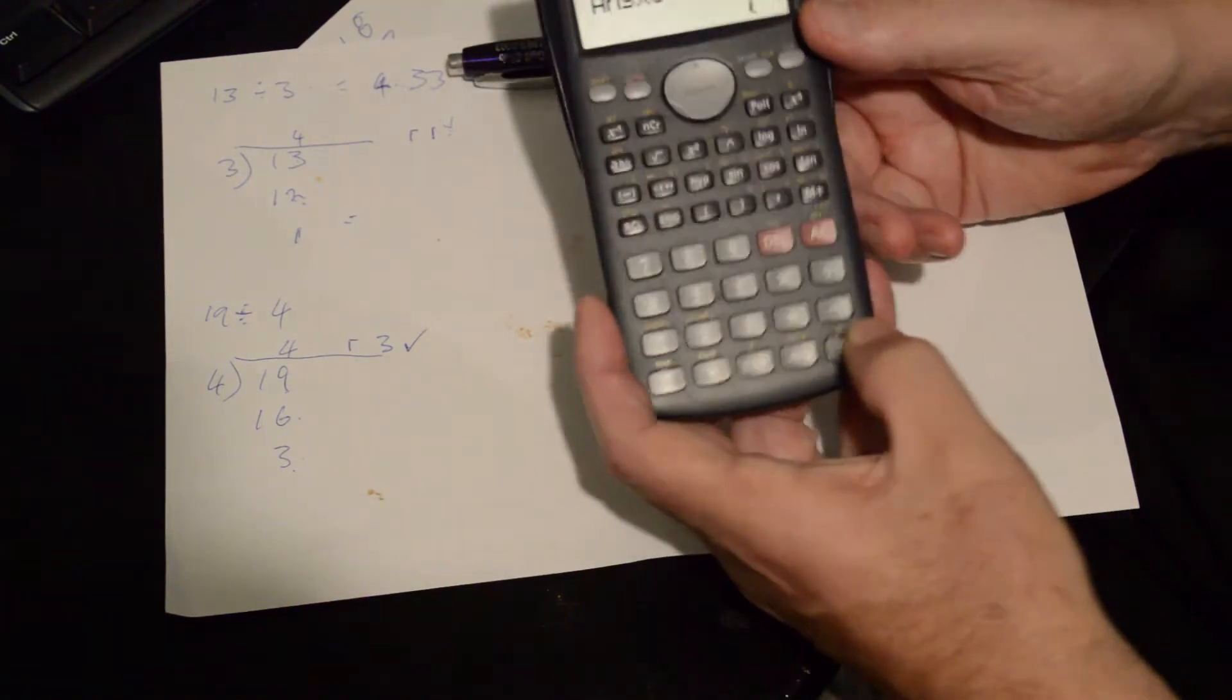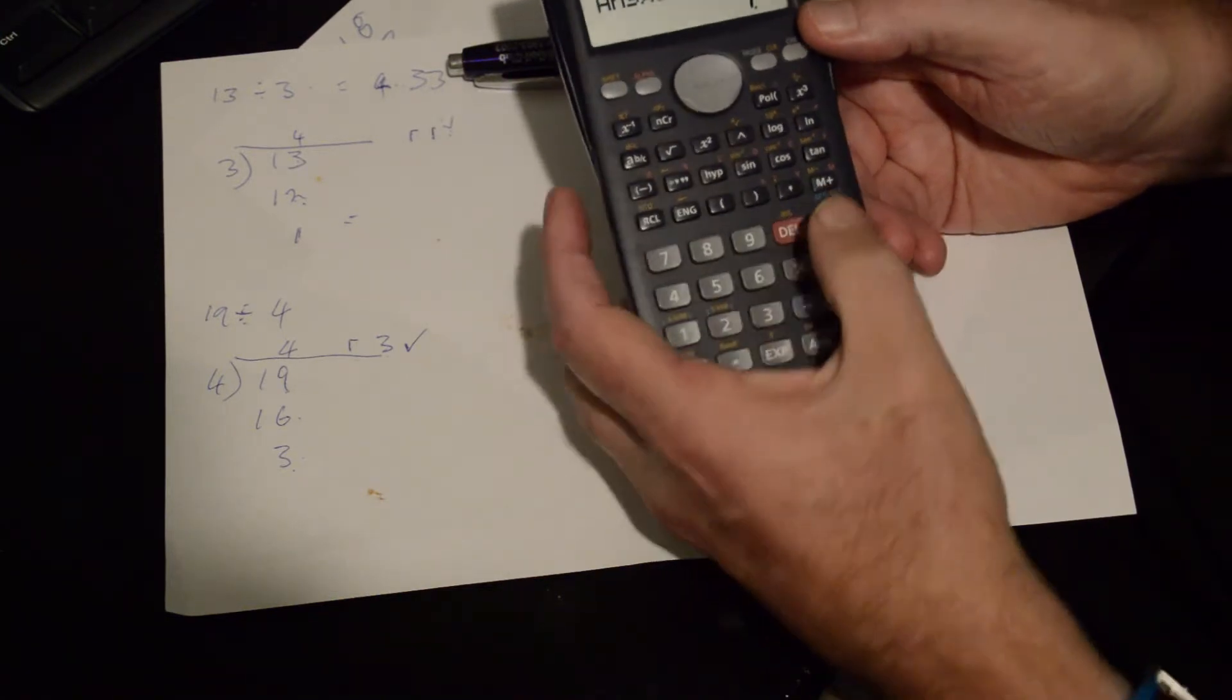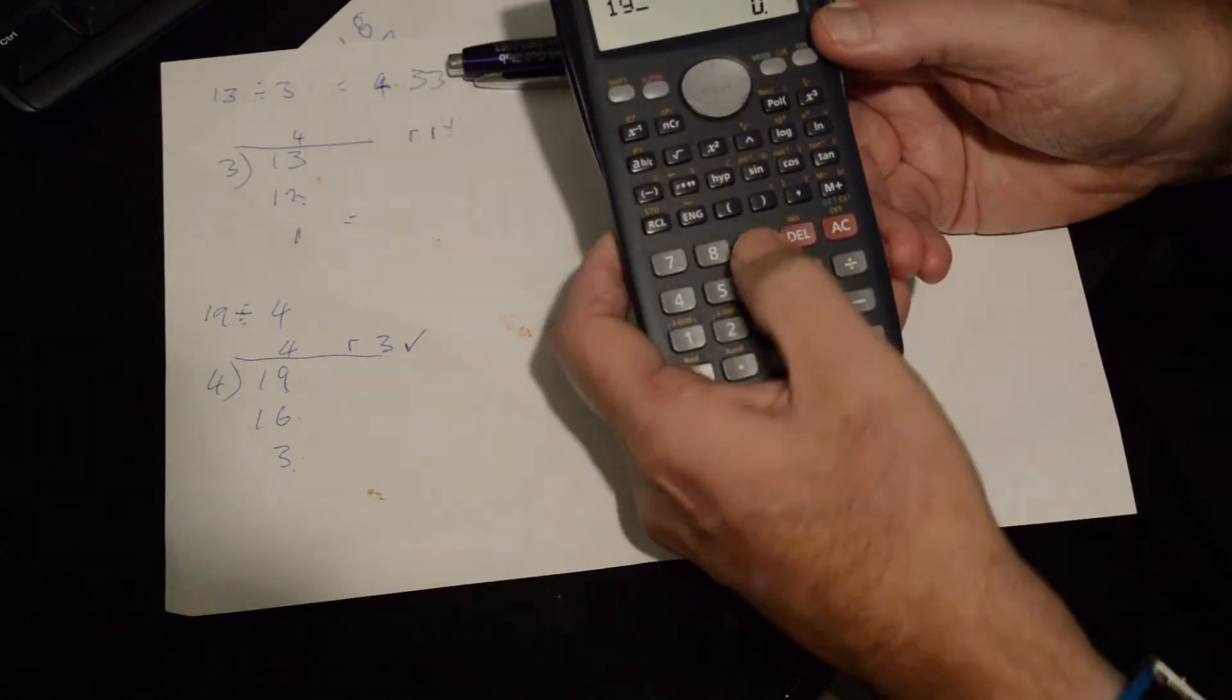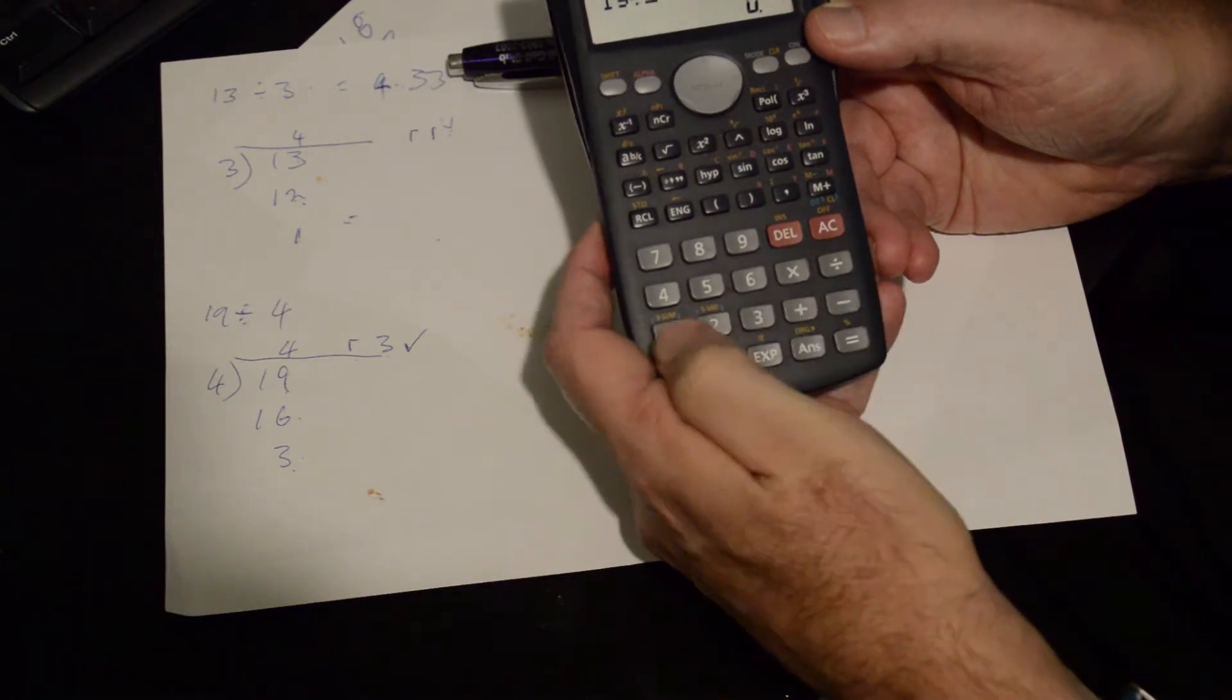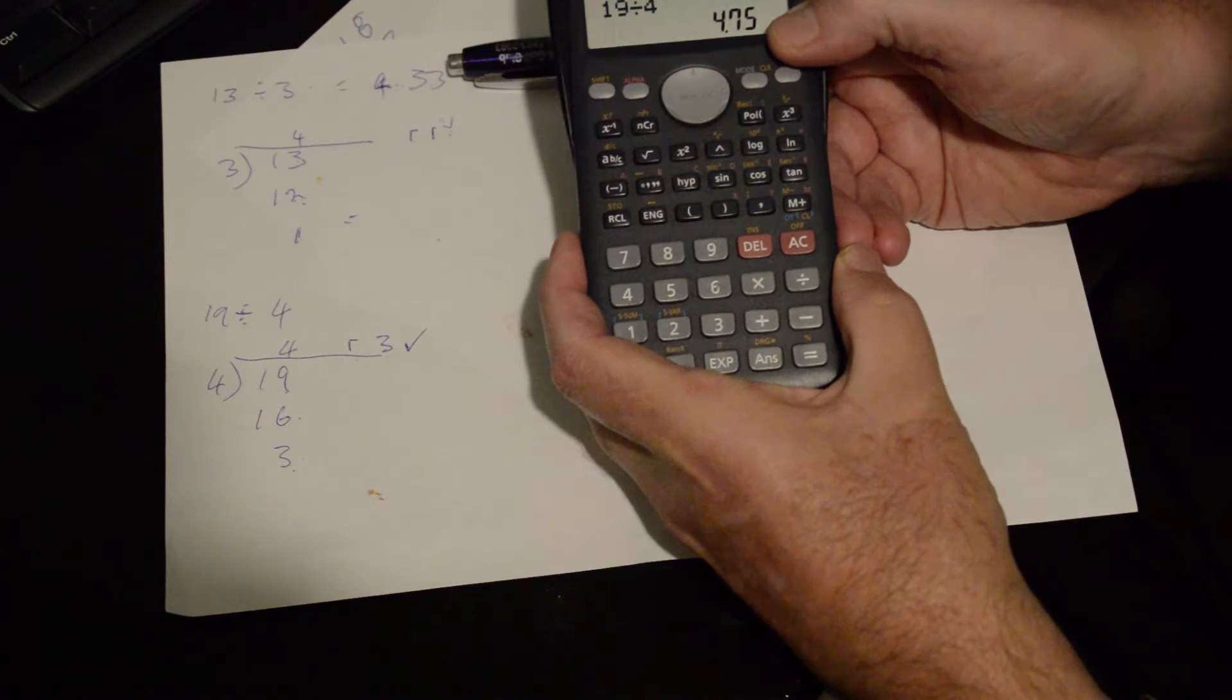Now, in the calculator we go 19 divided by 4 equals. So you've got 4.75 as the answer.